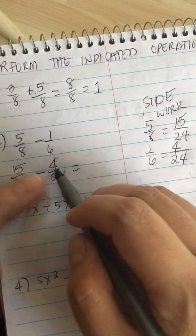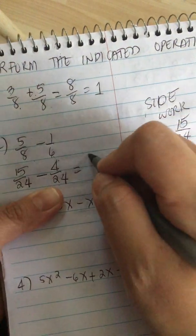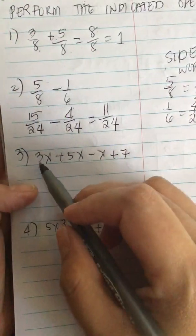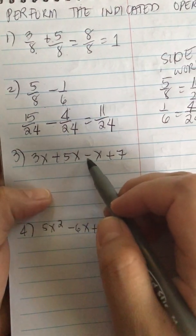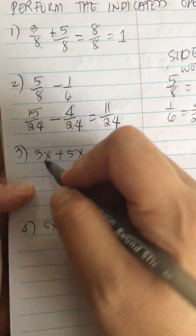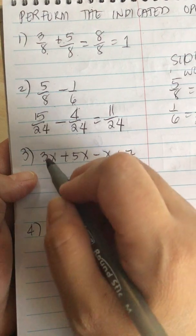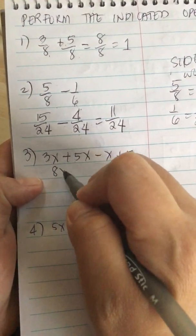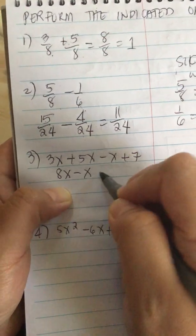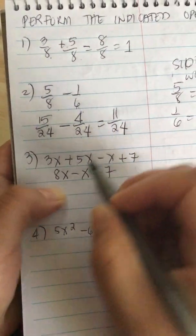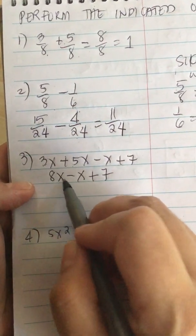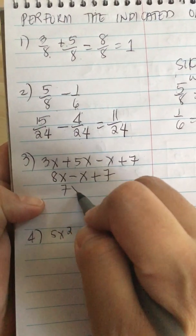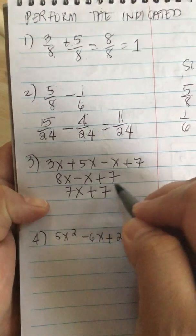So we have 3x plus 5x minus x plus 7. We have 3x and 5x for a net of 8x minus x plus 7. Now we have 8x minus x for a net of 7x plus 7.